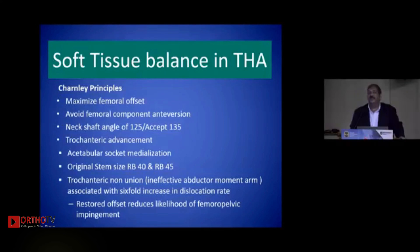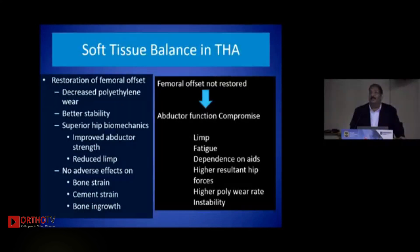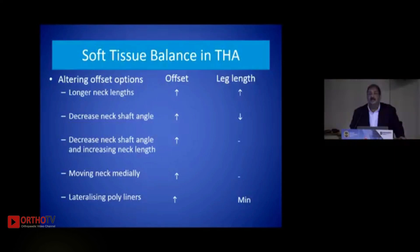A varus hip will obviously have more offset. Charnley, the doyen of hip replacement, designed two stems — the Round Back 14 and Round Back 45 — implying those were the two ideal offsets. Trochanteric non-union, where the abductor arm is not functional, did have an increased dislocation rate. If femoral offset is not restored, we get compromised abductor function, leading to limp, fatigue, higher resultant hip forces, higher polyethylene wear, and increased risk of instability.